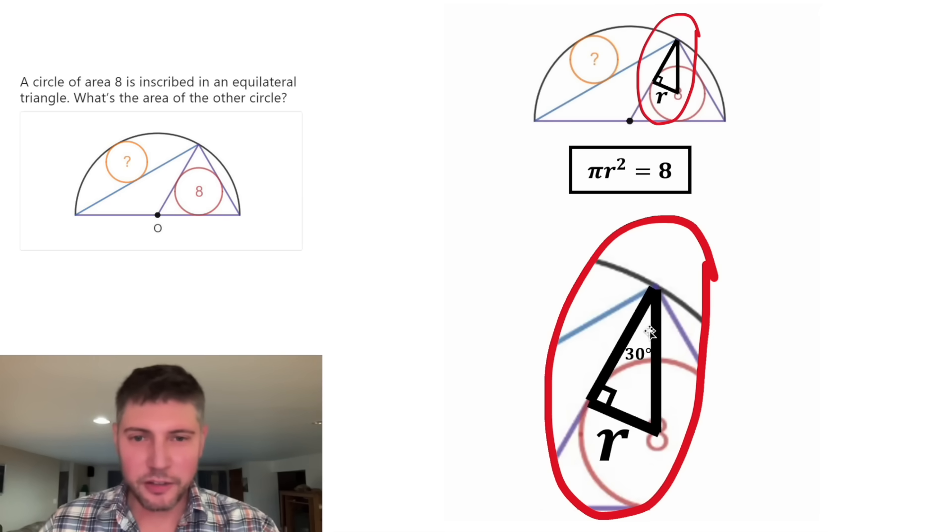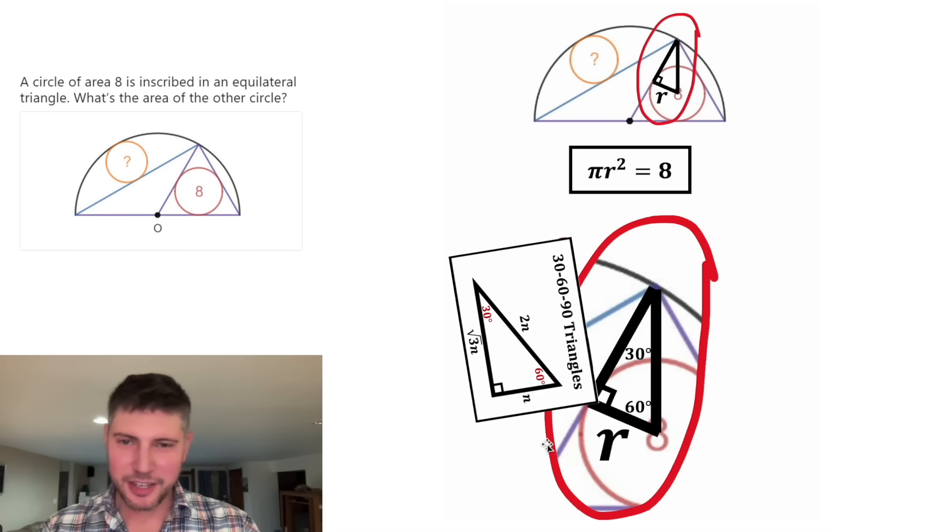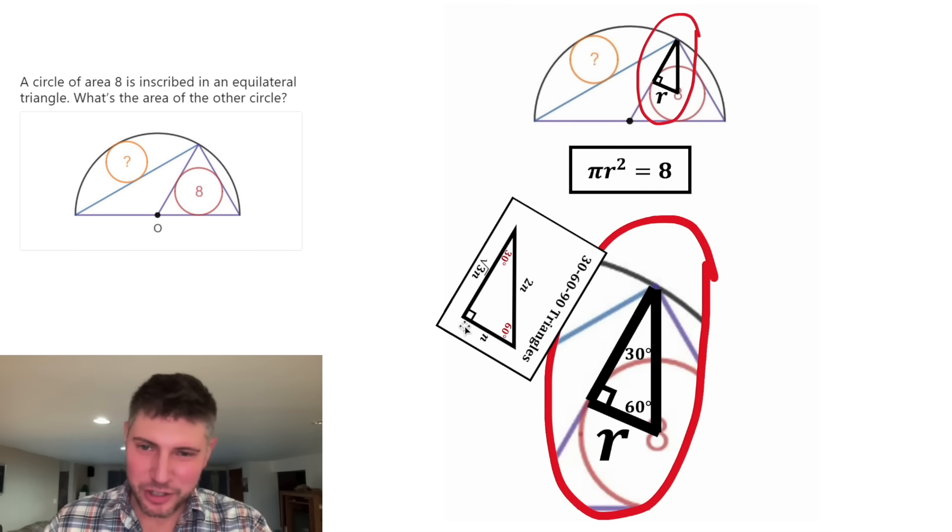And then in this triangle, if one angle is 30, another is 90, that means the last angle has to be 60 degrees, because all the angles add up to 180 degrees. This is a 30-60-90 triangle. Let's pull up the notes for 30-60-90 triangles. 30-60-90 triangles always have their sides in these proportions. Let's rotate the notes like this. So we can see whatever the shortest side is, to get the medium side, you multiply it by the square root of three.